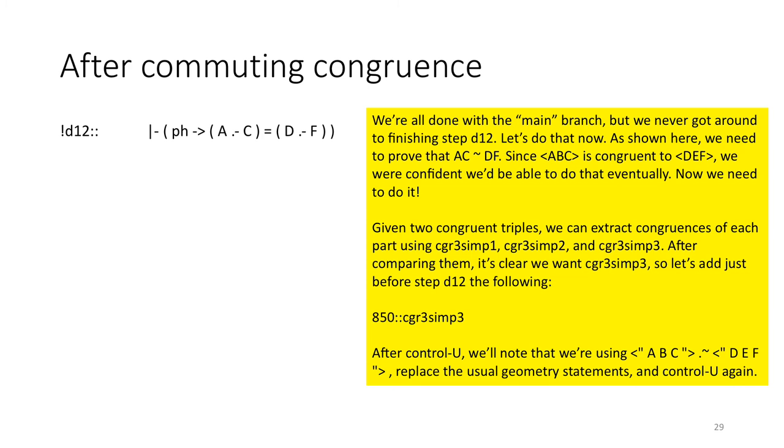We're all done with the main branch, but we never got around to finishing step D12. Let's do that now. As shown here, we need to prove that AC is congruent to DF. Since ABC is congruent to DEF, we were confident we'd be able to do that eventually. Now we need to do it. Given two congruent triples, we can extract congruences of each part using CGR3SIMP1, SIMP2, SIMP3.